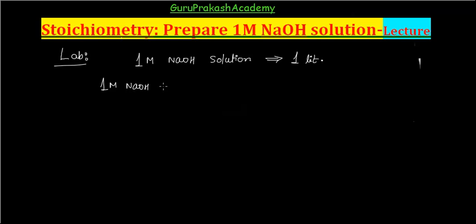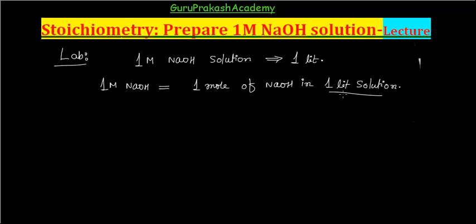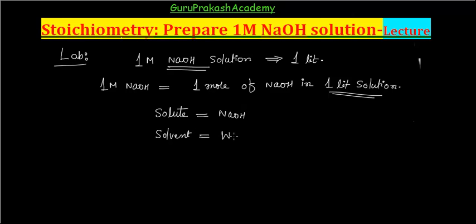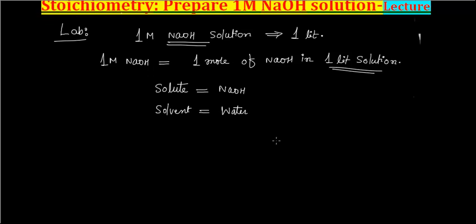What is the meaning of 1M NaOH? When I say 1M NaOH, this means 1 mole of NaOH in 1 liter of solution. This is important — it is 1 liter of solution, not 1 liter of water or 1 liter of solvent. In this case, NaOH is the solute and water is the solvent.